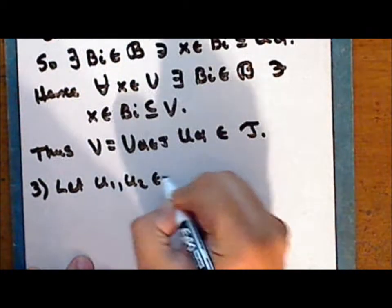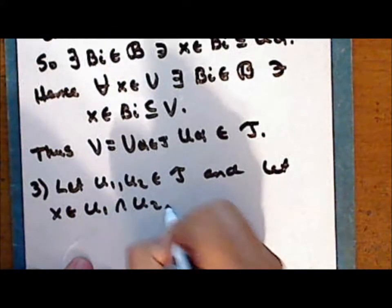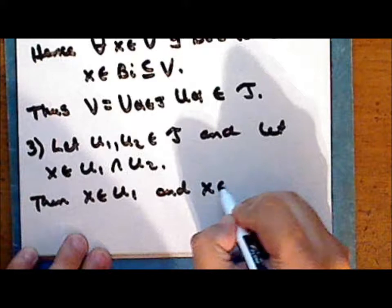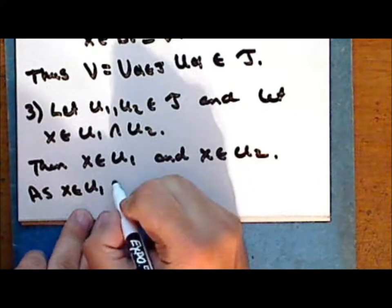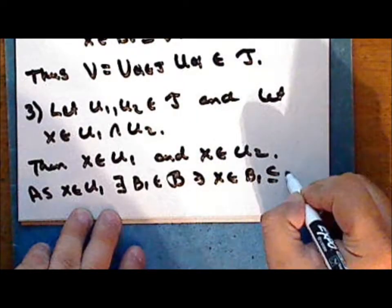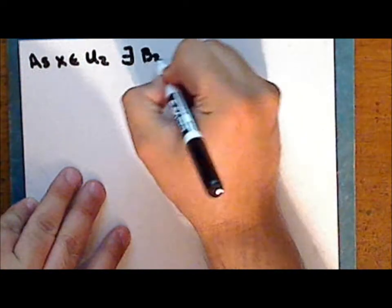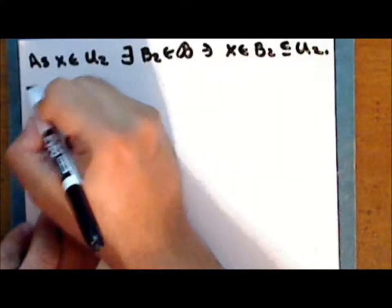Let U_1 and U_2 be two elements in τ and let the point x be in the intersection of these two sets. Then x is in U_1 and x is in U_2. Since U_1 is in τ, there exists an element B_1 in script B such that x is in B_1, which is a subset of U_1.